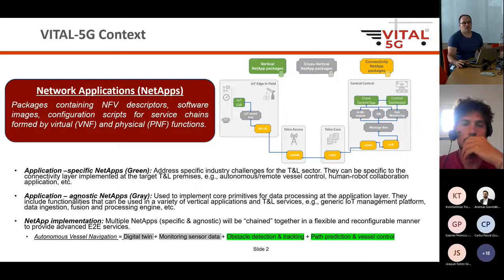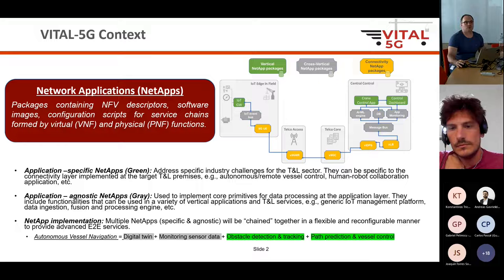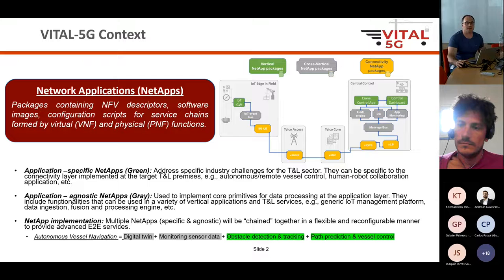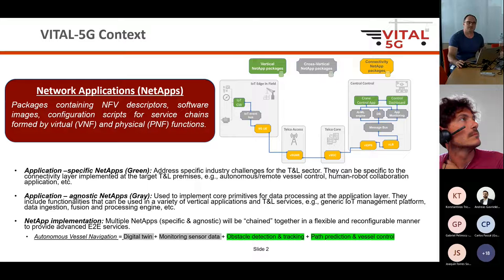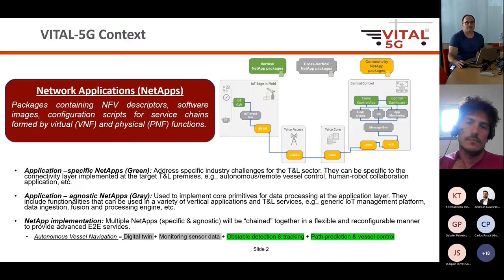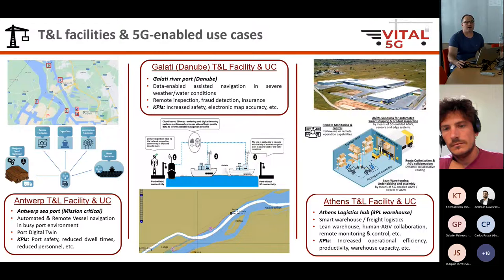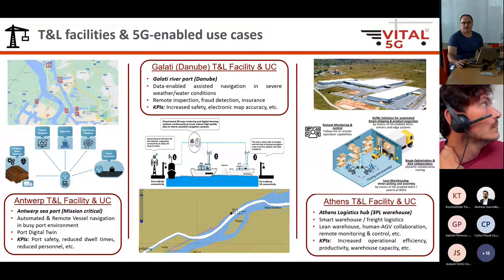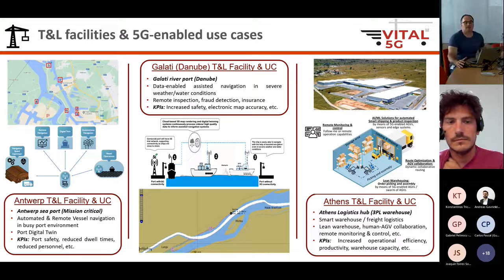Going back to the project, we mainly want to deploy different network applications — the NetApps — in different test beds and different architectures. Focusing on NetApp deployments, we want to achieve deployment of application-specific NetApps, shown in the green part of the slide, as well as application-agnostic NetApps, shown in gray. We also want to provide NetApp implementations where multiple specific or agnostic NetApps can be chained together to provide advanced end-to-end services.